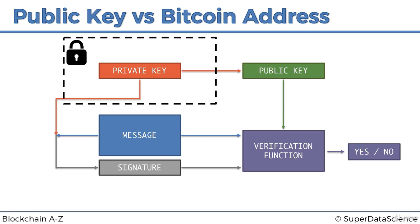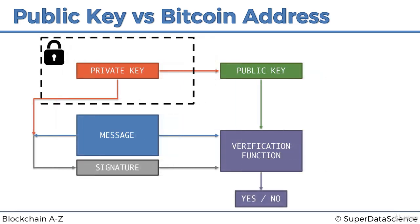So what is a Bitcoin address? Let's move this diagram a little bit to the left so we have some space on the right. A Bitcoin address is derived from the public key, and it's derived by simply applying the SHA-256 hash function.